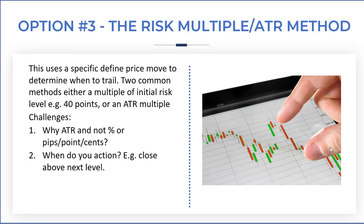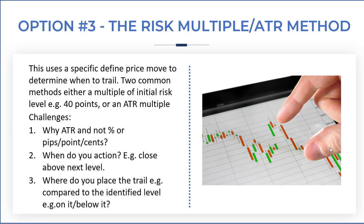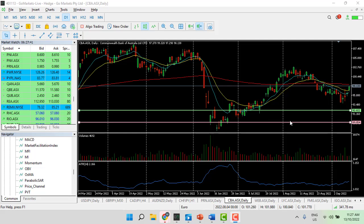There are three key questions: first, when do you action the trail — for example, on a close above the next level, or at any time? Second, where do you place the trail compared to the identified level — on it, or just below it? Where you plant your flag is up to you. The key thing is to be specific so you can be consistent, measure it, and test alternatives. Plant your flag, trade it religiously, then test the alternative — that's the system.